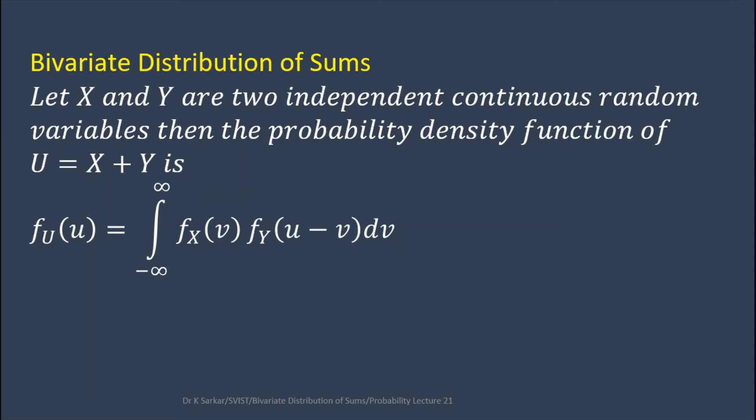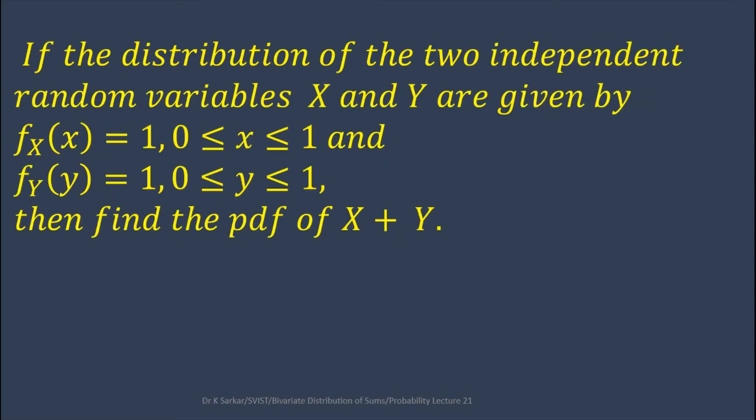Another theorem: Let X and Y be two independent continuous random variables. Then the probability density function of U equals X plus Y is f(u) equals integration from minus infinity to infinity of f_X(v) times f_Y(u minus v) dv.